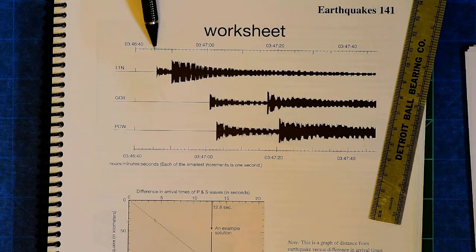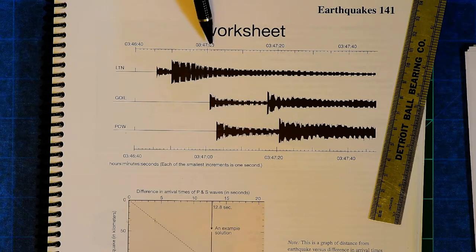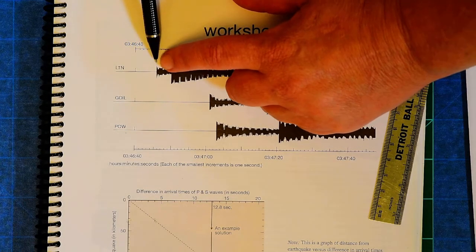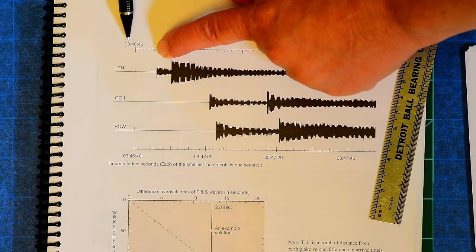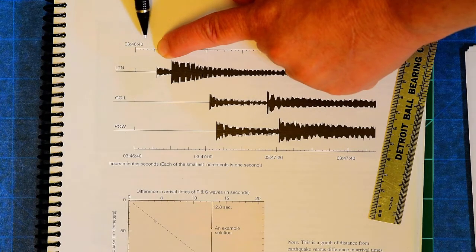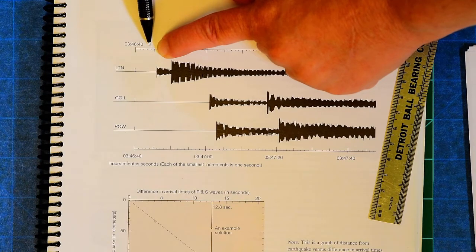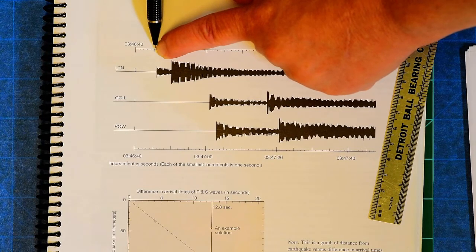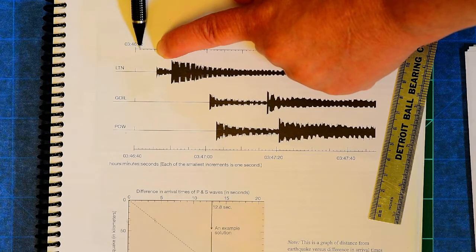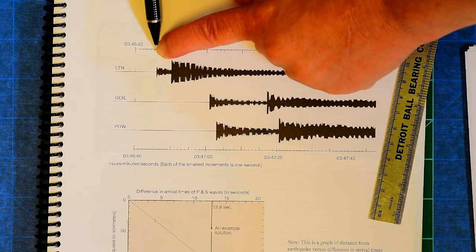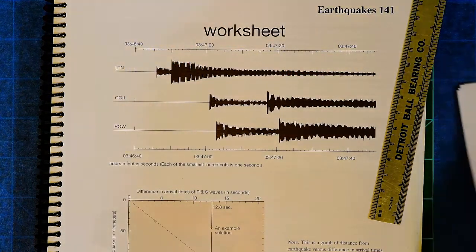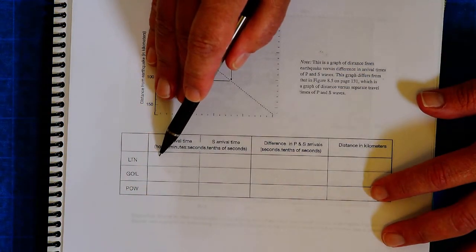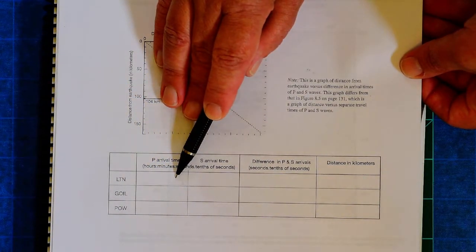That's 40 seconds, 45, 50, 55. There's the next minute. And if our P wave arrives right there, that means it's 3 hours, 46 minutes, 45 seconds. Right? Because this is 40, 41, 42, 43, 44, 45. And so that is what you would write down here. You would write 3 hours, 46 minutes, 45 seconds.